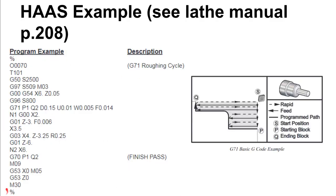The G71 is the stock removal cycle and takes specific parameters. Here's a real simple G71 program. Notice something new: line numbers — N1 here and N2 down there. They don't have to be sequential; you only need line numbers where they're relevant. These line numbers are drawing the code — describing what the shape of the finished part looks like. Between N1 and N2, the code essentially draws the profile of the finished part.